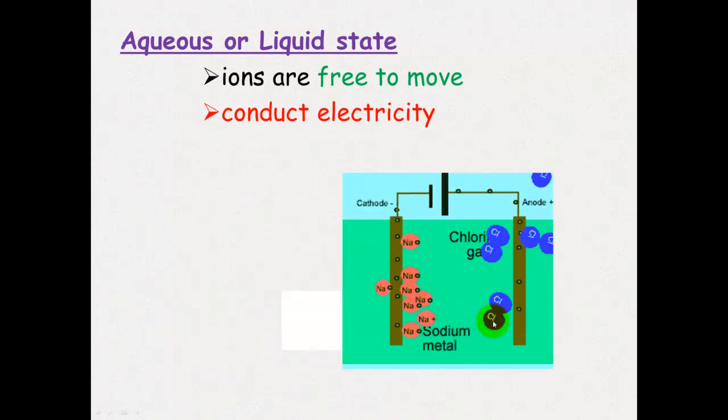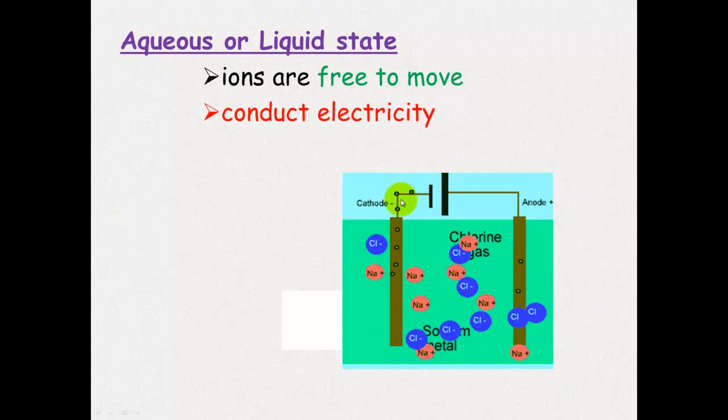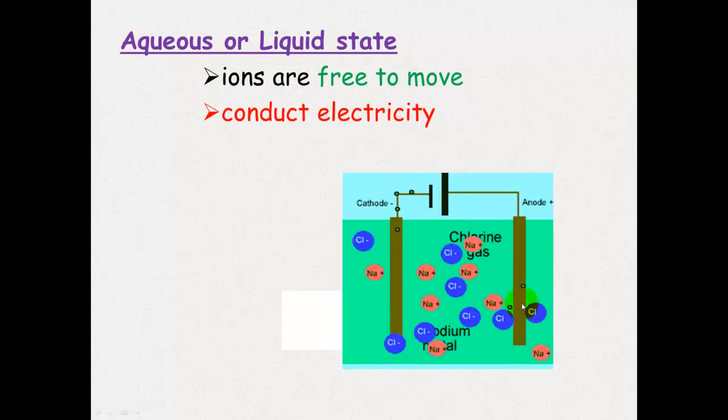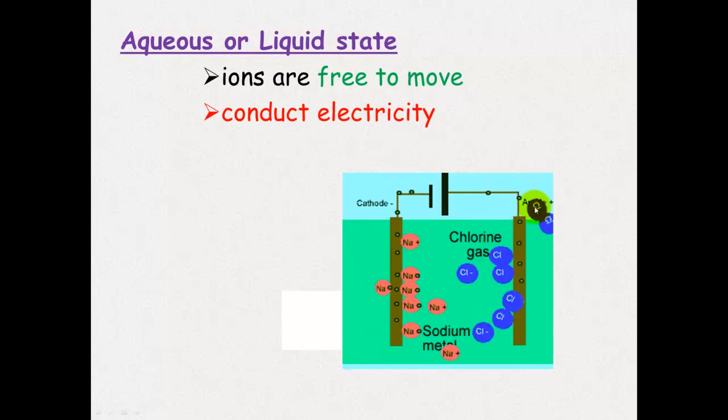So here we've got free moving ions. And you can see when an electric current is applied, we have the cathode here, which has a negative charge and it attracts the positive sodium ions. And on this side, we have a positive charged anode and that attracts the negatively charged chloride ions.